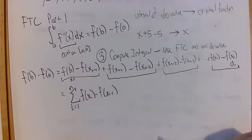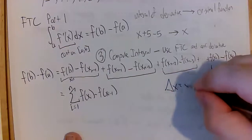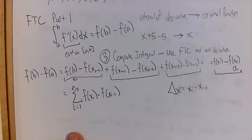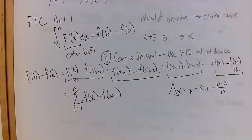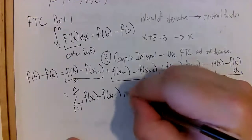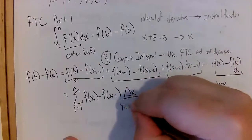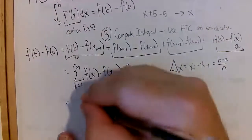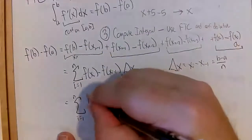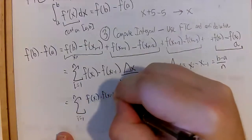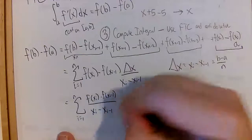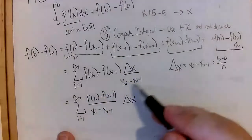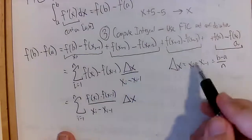Now I'm going to define delta x to be x_i minus x_{i-1}, assuming a uniform difference between all the x_i's — this is the (b minus a)/n we've seen before. I'm going to multiply the top and bottom of each term by delta x, which equals x_i minus x_{i-1}. So we get f of x_i minus f of x_{i-1}, all divided by x_i minus x_{i-1}, times delta x. I was able to multiply top and bottom by seemingly different things because they're actually the same.